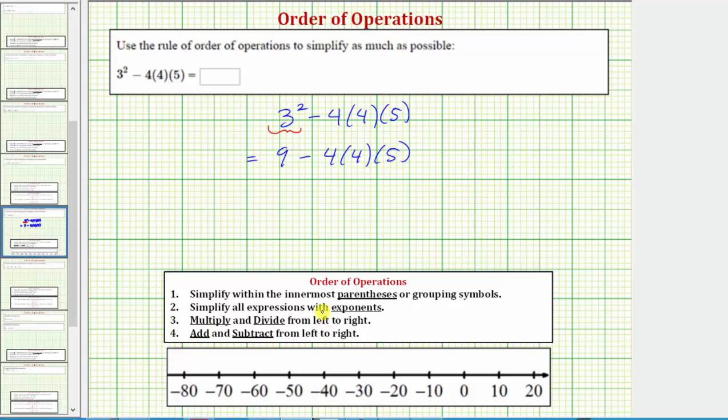Step three, we multiply and divide from left to right, so our next step we'll find this product here. So simplifying, we have nine minus four times four. Four times four is equal to sixteen. Sixteen times five is equal to eighty.